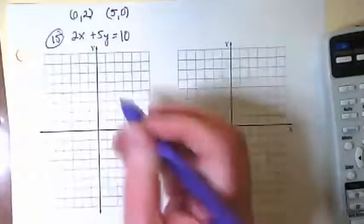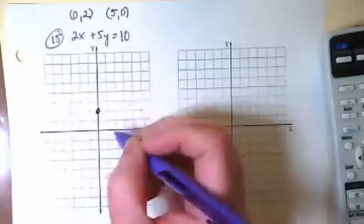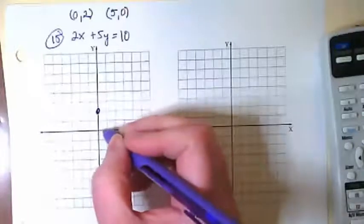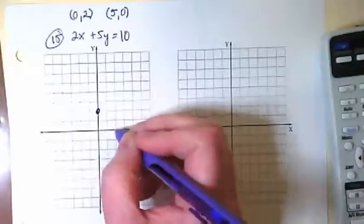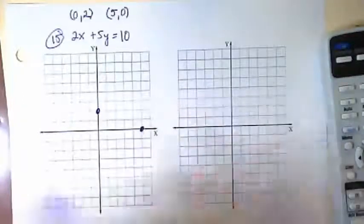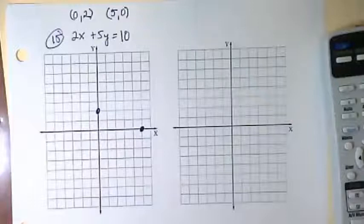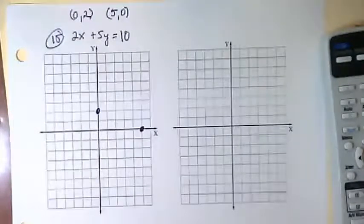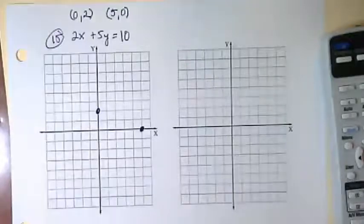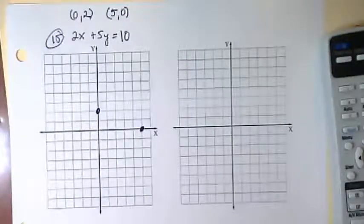0, 2. And 5, 0. What kind of slope are we going to get with this graph? Yeah, it's going to be negative. But we don't have that anywhere in an equation today. We're only going to see it when we get it on the graph.